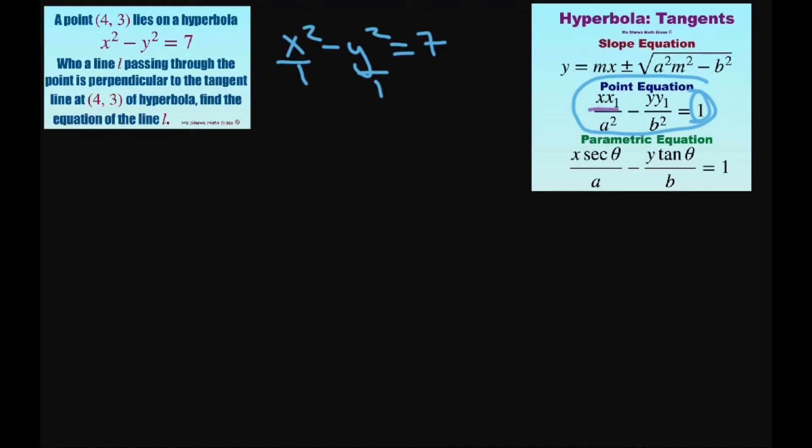So basically I'm just going to take my point and multiply it by my x. So the equation is going to be 4x minus 3y equals 7. So basically I just multiplied the 4 and the 3 by my x and my y.